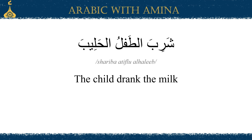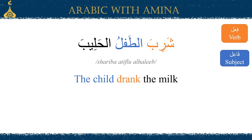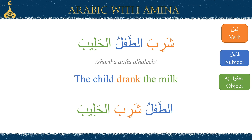Let's go through a few other examples. 'The child drank the milk.' Let's first identify the verb, which is شرب or 'drank.' The subject — the person who drank — is the child, الطفل. And what did he drink? الحليب, making it مفعول به or the object. In this sentence we started with the verb followed by the subject, but we can do the opposite — starting with the subject followed by the verb: الطفل شرب الحليب.